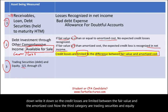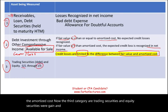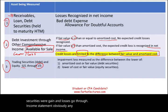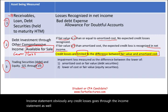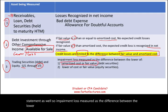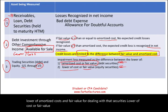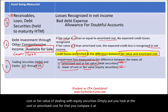The third category is trading securities and equity securities, where gains and losses go through the income statement. Any credit losses also go through the income statement. The impairment loss is measured as the difference between the lower of amortized cost and fair value for debt securities, or lower of cost or fair value for equity securities — and that difference is booked in net income.